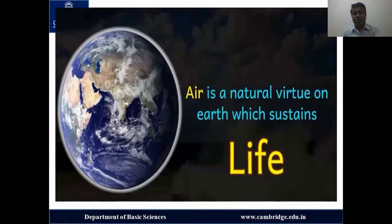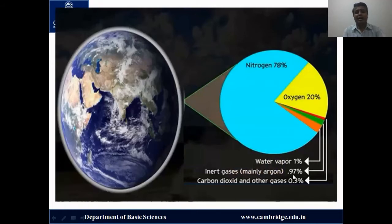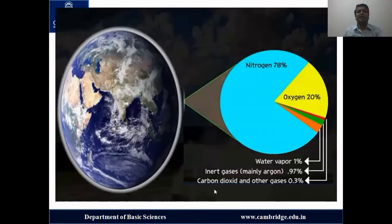Air is a natural virtue on earth which sustains life activities. The composition of air is: nitrogen 78%, oxygen 20%, water vapor 1%, inert gases — mainly argon — 0.97%, and remaining gases 0.3%.